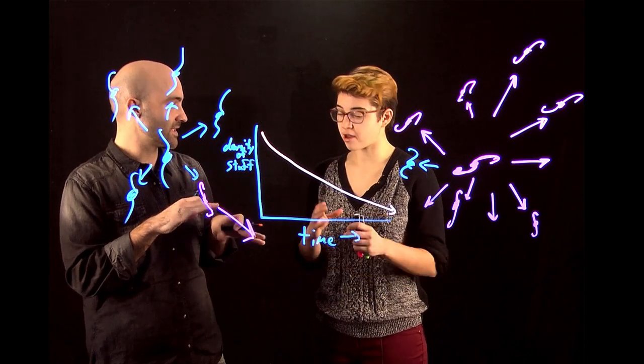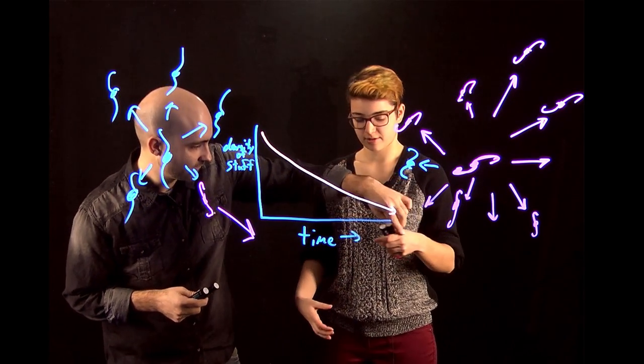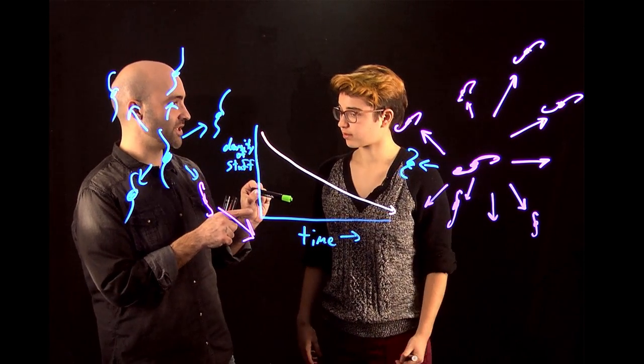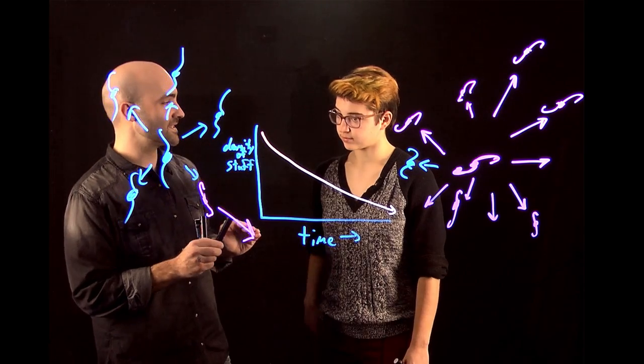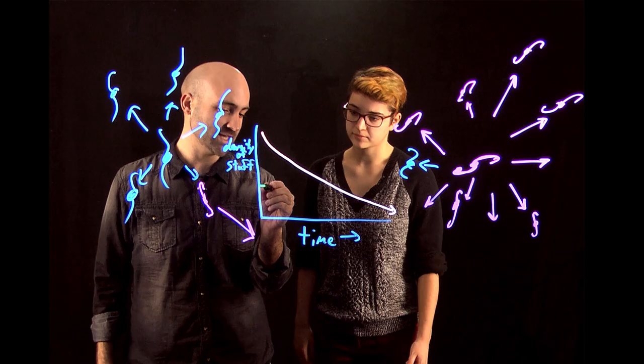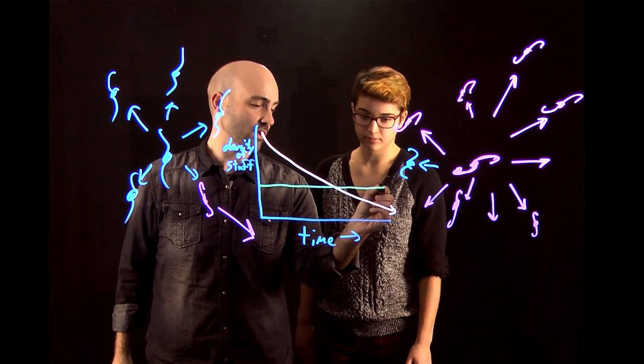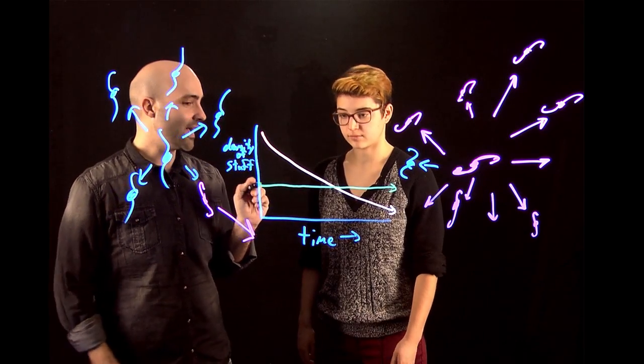Right. You're diluting the matter in the universe. The amount of stuff stays the same, but the container it's being held in is growing. But dark energy, dark energy is constant. That's what we think. So note, all through time, it's like this. Always has the same density, all throughout time.